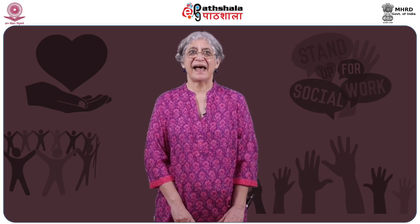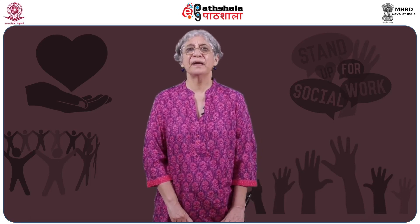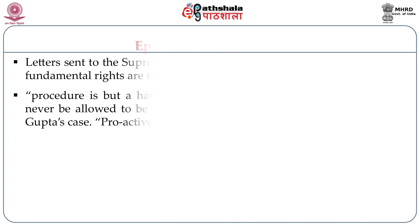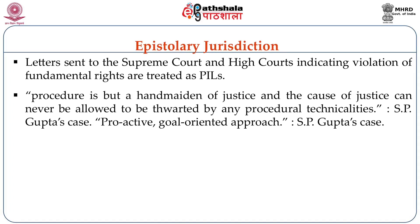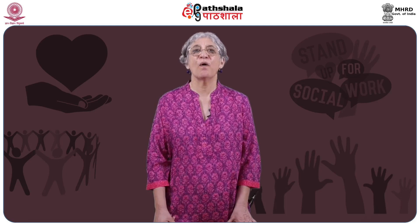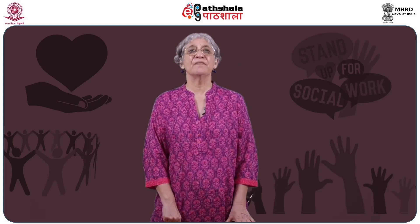The judgment says that mere technicalities and formalities should not deprive a person of social justice. A person may not be able to approach the court because he may not be able to handle the technicalities and formalities required in a regular writ petition. In S.P. Gupta's case, the Supreme Court continues to say a proactive goal-oriented approach should be the focus — the Supreme Court has to be proactive in ensuring that people enjoy their fundamental rights and cannot be a silent spectator. They have to innovate and bend the technicalities to ensure that a person enjoys his rights under the Constitution and statutes.